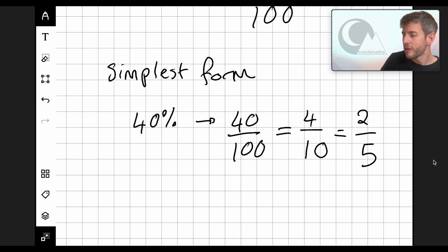OK, this is called equivalent fractions. So we know that 2 over 5 is equivalent to 4 over 10, which is equivalent to 40 over 100. Let's have a look at another.